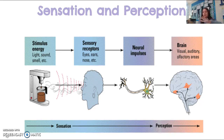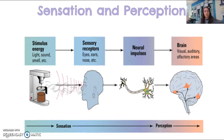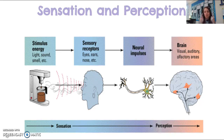Sensation is the picking up of a stimulus in your environment — picking up a touch, light, a smell, a taste, or a sound. In this picture, it would be picking up the sight of the coffee maker, the sound of the coffee being made, and the smell of the coffee. Your sensory receptors in your eyes, ears, and nose pick those up and send the message to the brain.